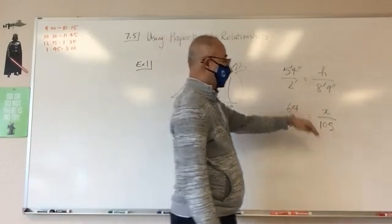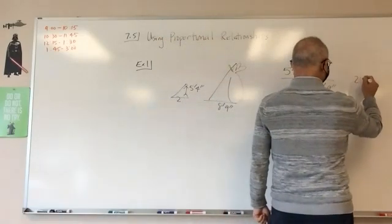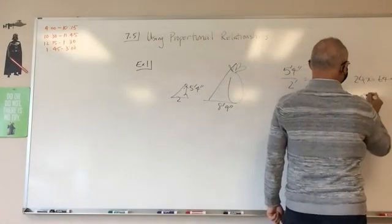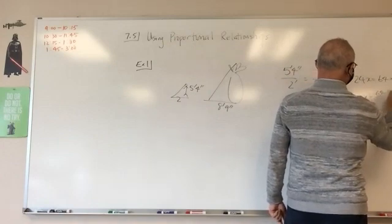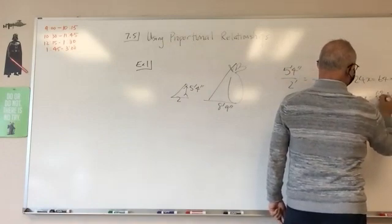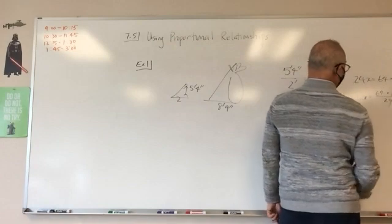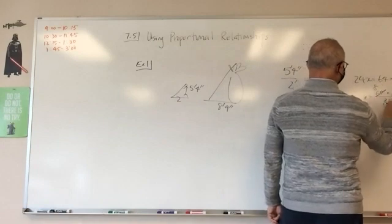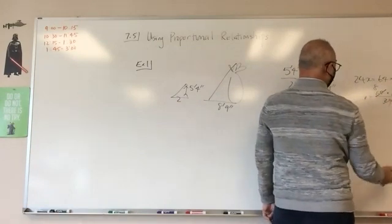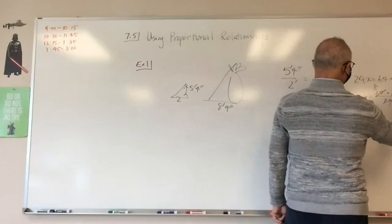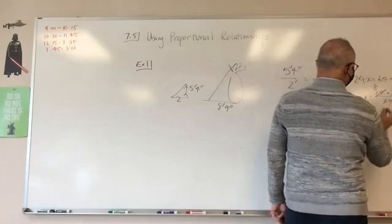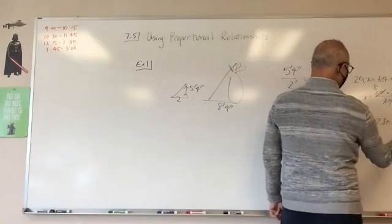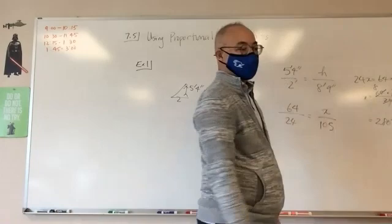We'll just cross multiply. I get 24x is equal to 64 times 105. X is equal to 64 times 105 over 24. Divide by 8, divide by 8, divide by 8, divide by 3. I'm going to get 240 plus 40, 280. 280 inches.